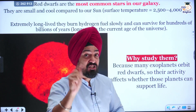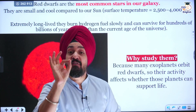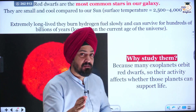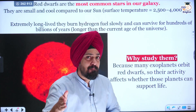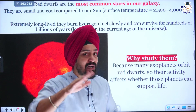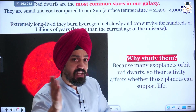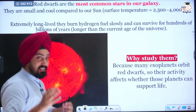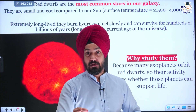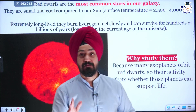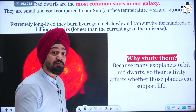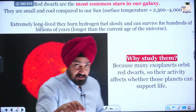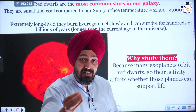The surface temperature of our sun is 5500 degrees Celsius, whereas the surface temperature of a red dwarf is much less — between 2400 to 4400 degrees Celsius. When it comes to size, red dwarfs are also much smaller than the sun. They are a thousand times less luminous and a thousand times smaller than our sun.